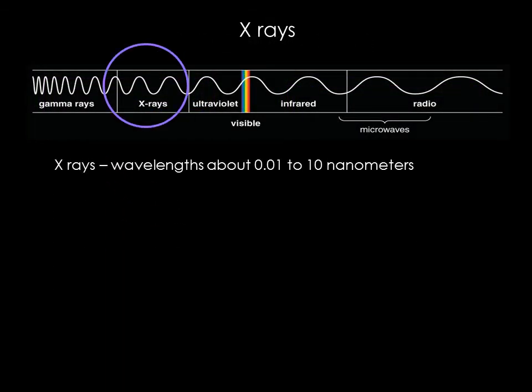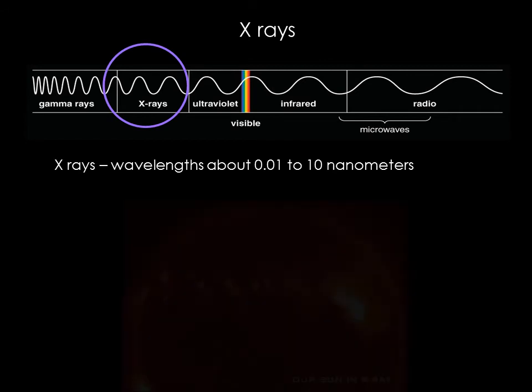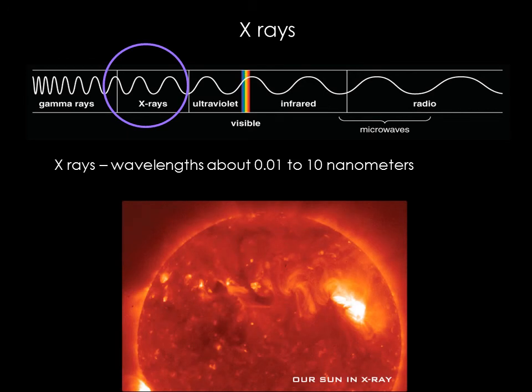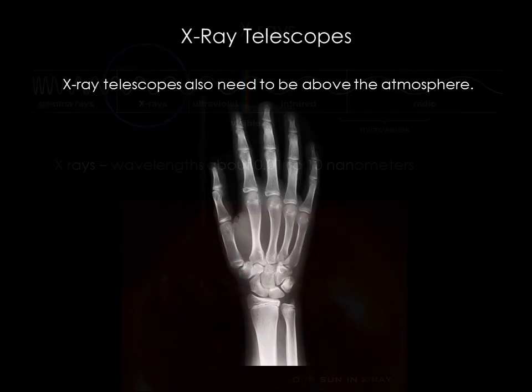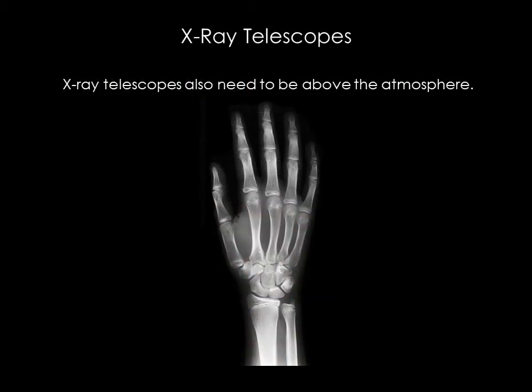X-rays have much higher energy and much shorter wavelengths than ultraviolet light. Astronomers often refer to X-rays in terms of their energy rather than their wavelength. This is partially because X-rays have very small wavelengths, between 0.01 and 10 nanometers, so small that some X-rays are no bigger than a single atom of many elements. Although X-rays do not penetrate the Earth's atmosphere, they do go through most other things. This is useful to doctors, but poses a challenge for astronomers: how do you focus light that passes right through a solid mirror?